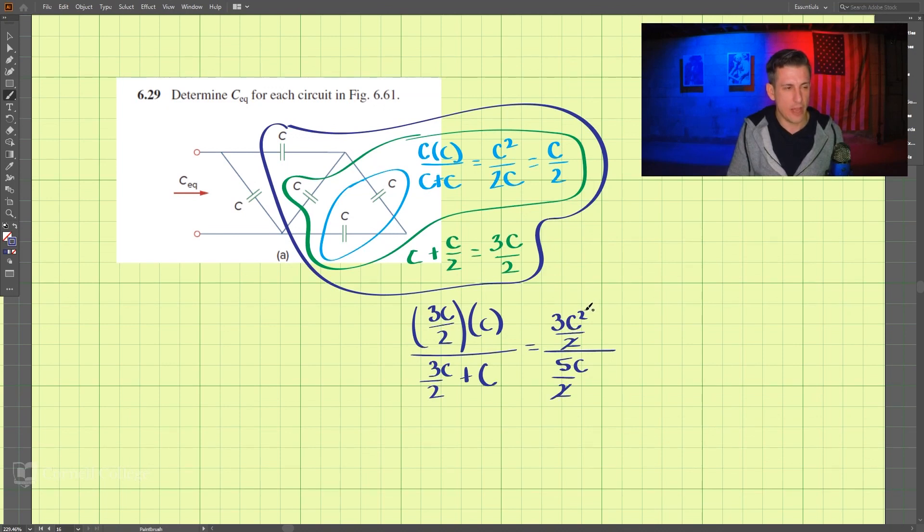And then we have one of the C's cancel here. So that looks like that turns out to be 3C divided by 5.